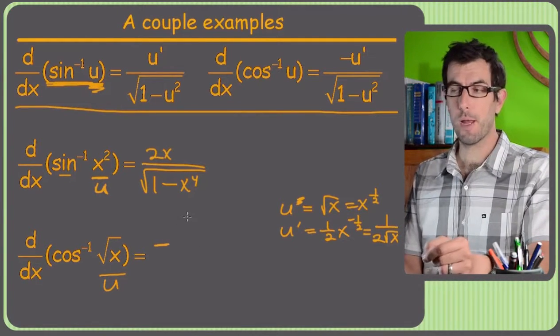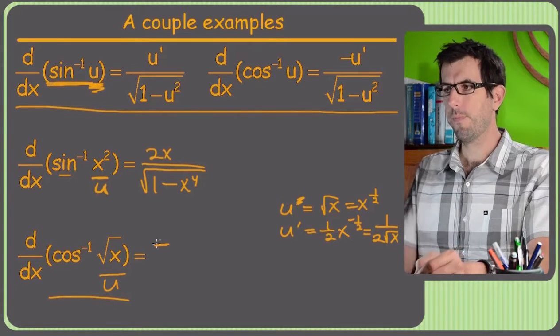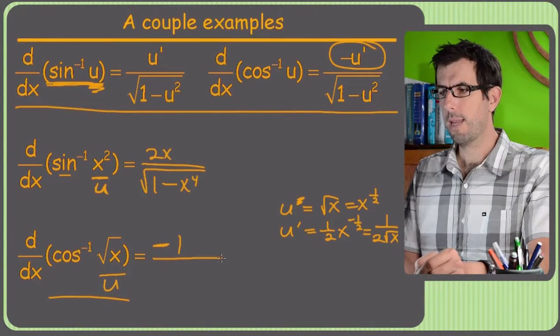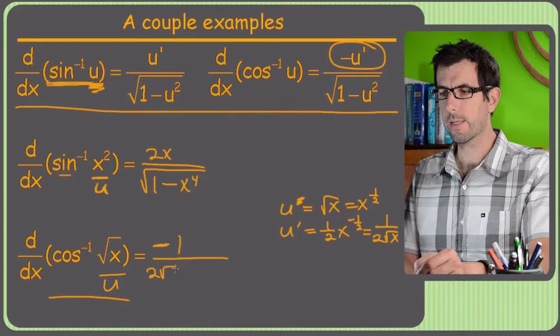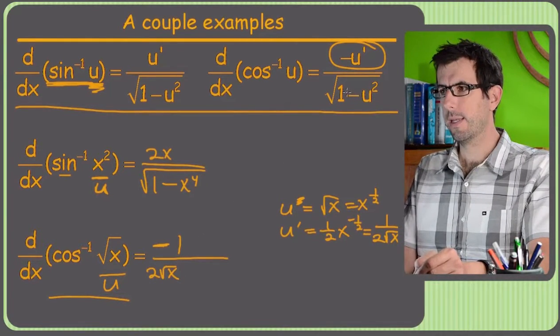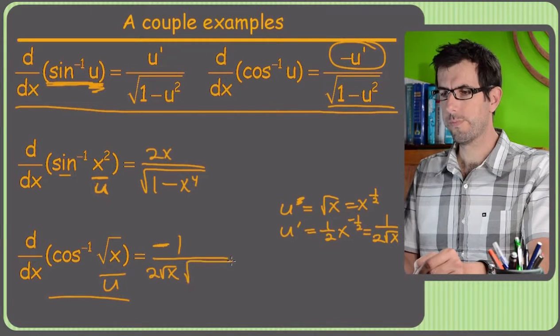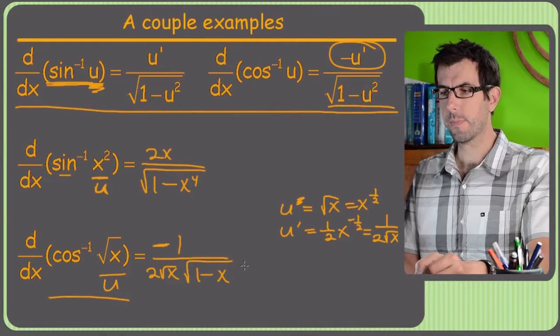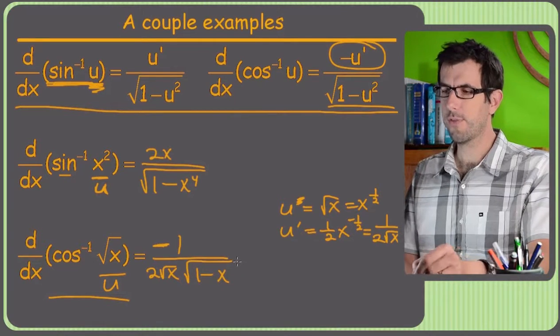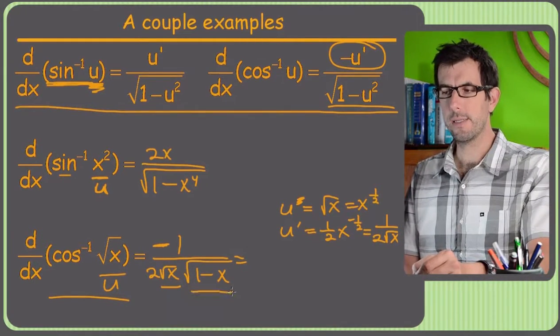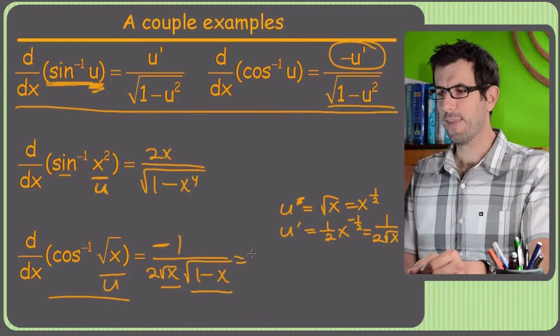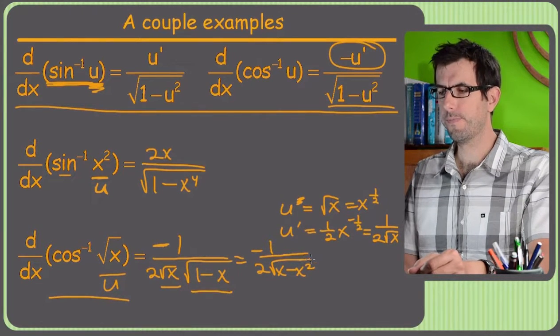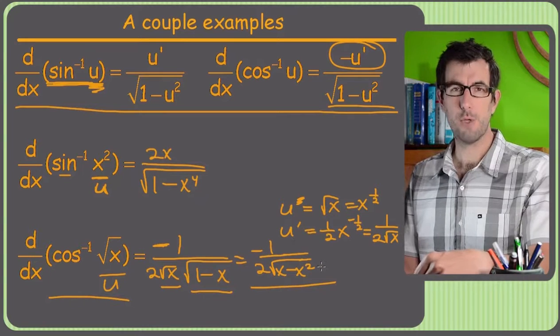Alright, so that's what we're going to plug in for U prime. So when we do an inverse cosine problem, we got a negative U prime upstairs, that's going to be negative 1. And I'm going to put that 2 root x in the denominator of the giant fraction. So 2 root x. And then I got my square root of 1 minus U squared. So U squared is just square root of x squared is just x. Alright, and that's not really reducible. Well, just for the heck of it, I guess we could multiply this root x into this other root stuff. So at least we only have one square root downstairs. So we'll have negative 1 over 2 square root of x minus x squared. Alright, not too bad. Plug and chug. Don't forget U prime, naturally.